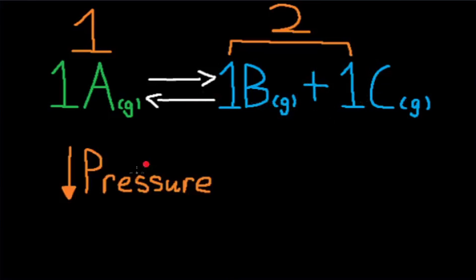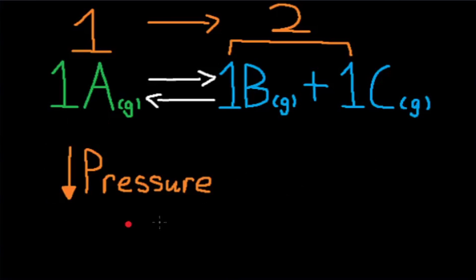If pressure decreases, the reaction will shift right to regain lost pressure, as the product side has more gas moles. How I like to remember this is: when pressure decreases, point at the bigger number. It's kind of opposite to what you'd think, because decrease and bigger number don't really go together. Sometimes questions may disguise pressure changes through volume changes. Just remember that volume and pressure are opposites, or as Boyle's Law puts it, they are inversely proportional.